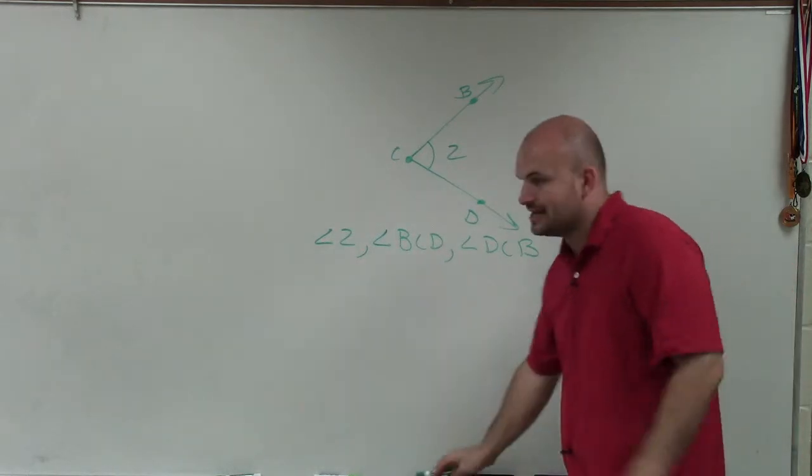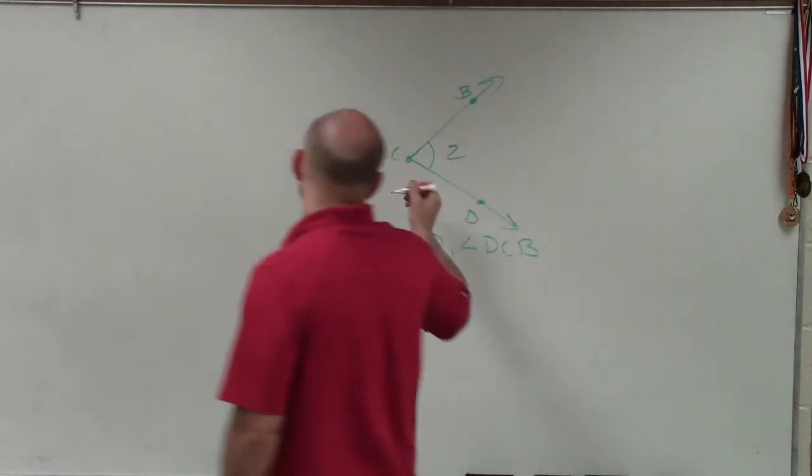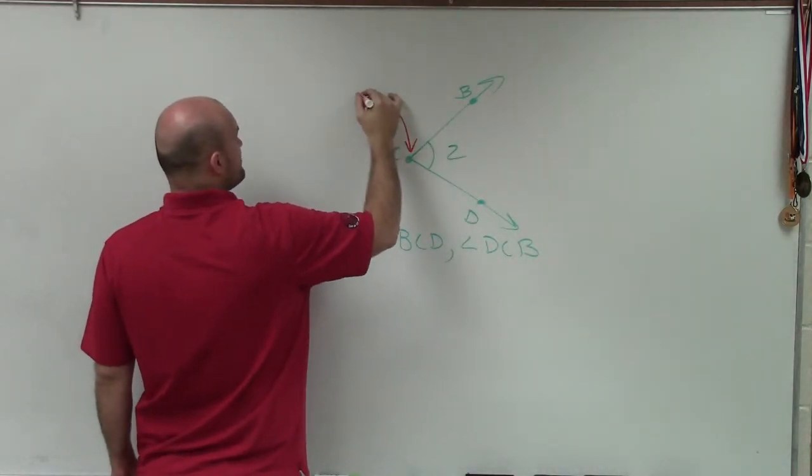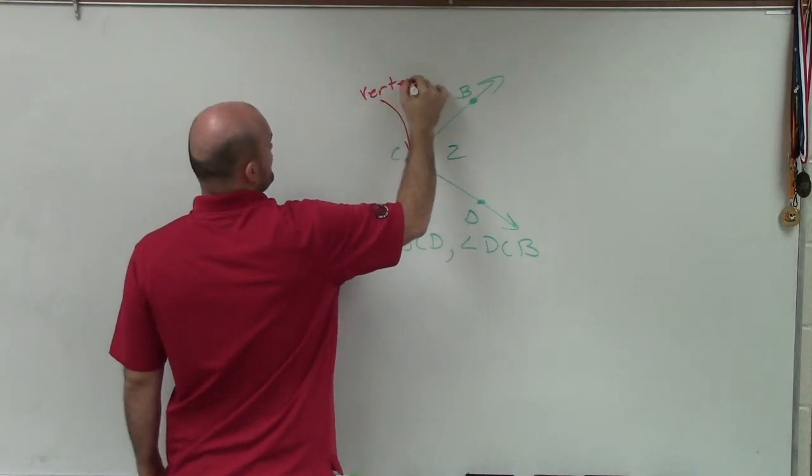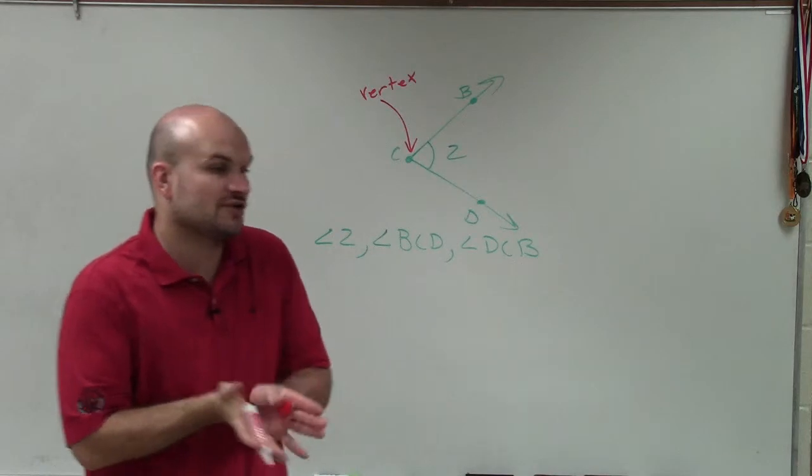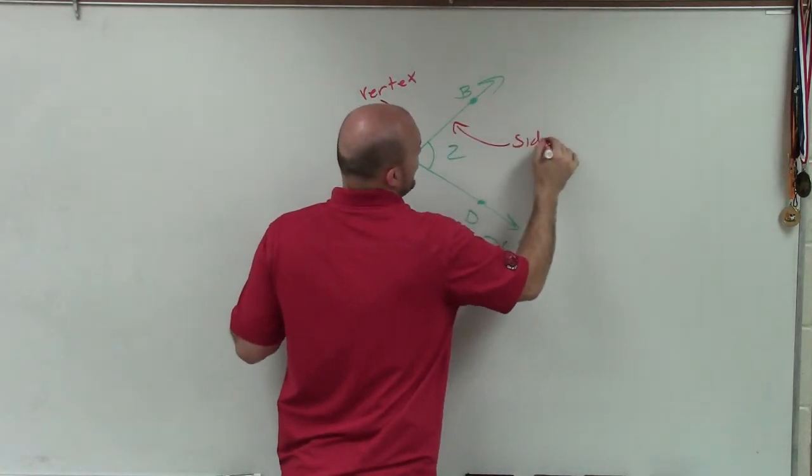The common endpoint actually has a name that we want to use, and this has become very important. The common endpoint of an angle is what we call the vertex. The rays that form to create our angle are what we call the sides.